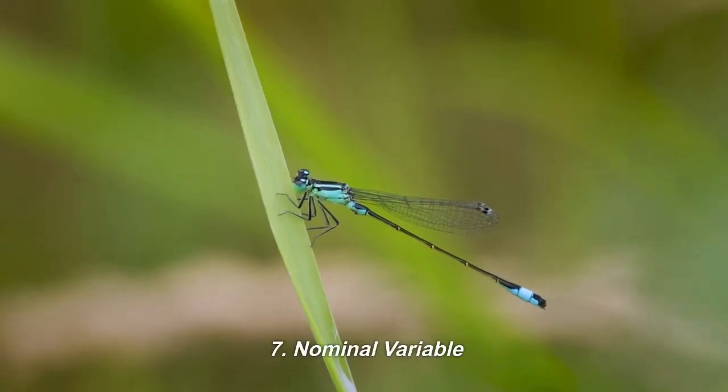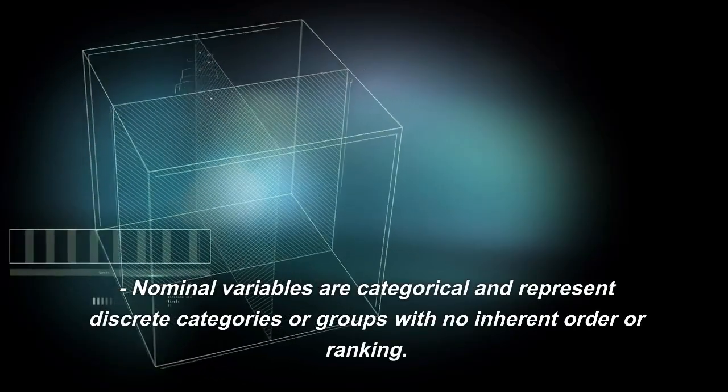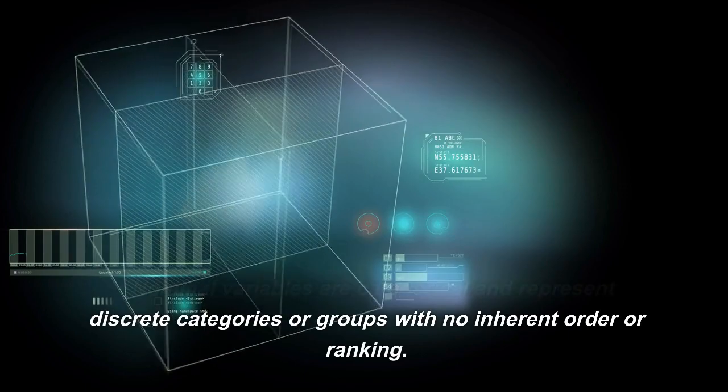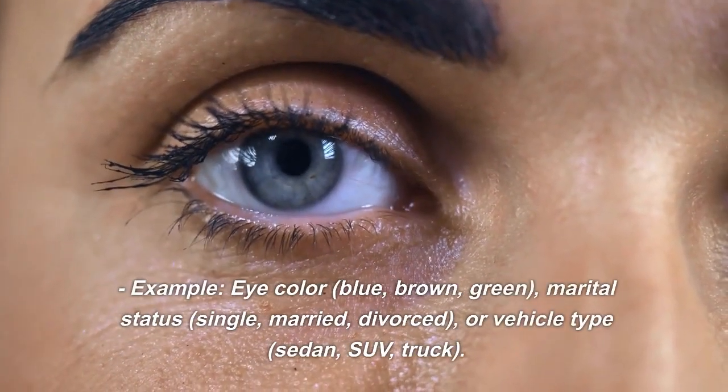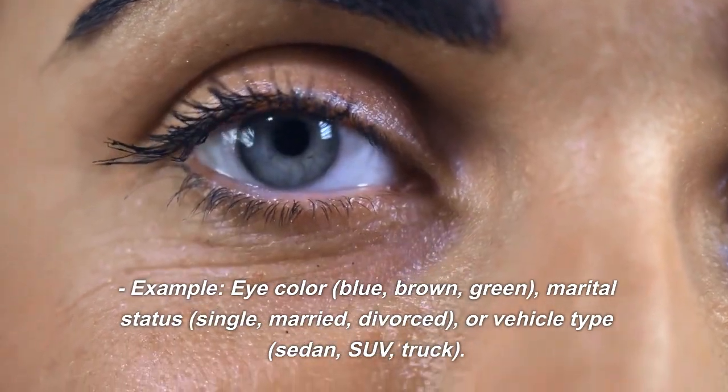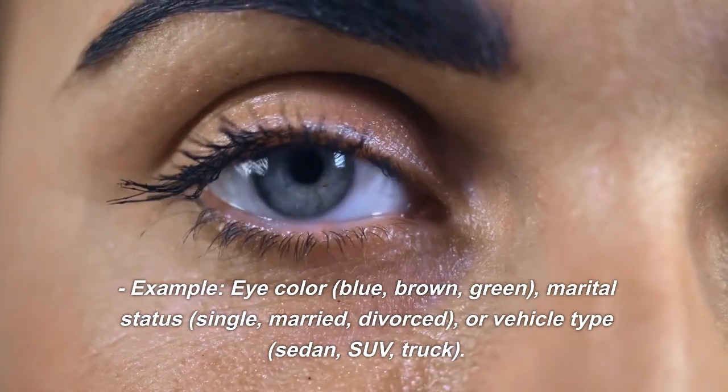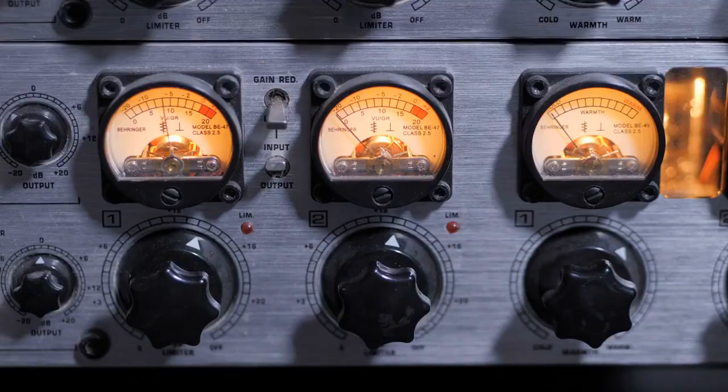Nominal variable. Nominal variables are categorical and represent discrete categories or groups with no inherent order or ranking. Example: Eye color (blue, brown, green), marital status (single, married, divorced), or vehicle type (sedan, SUV, truck).